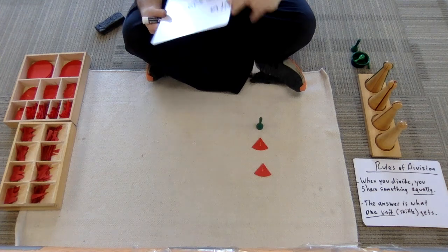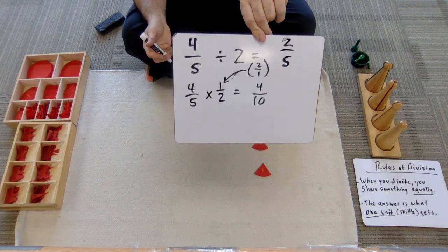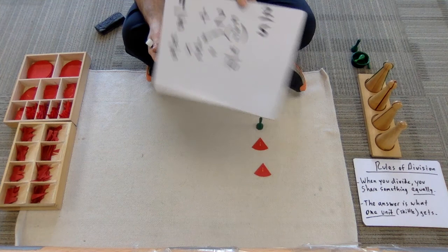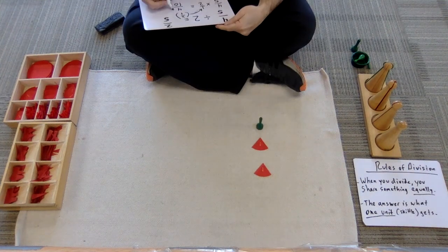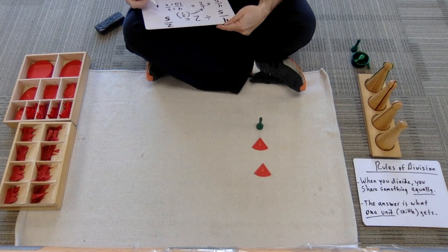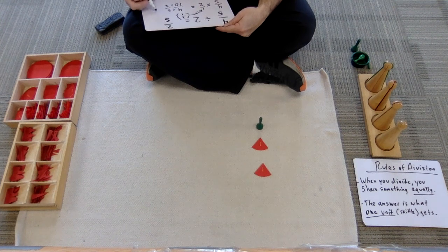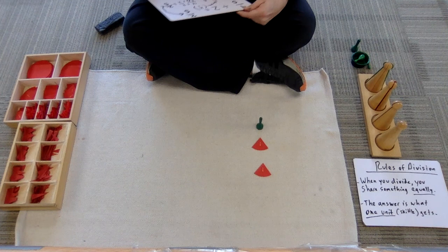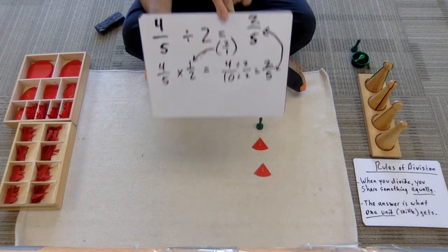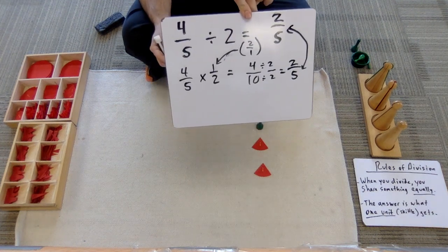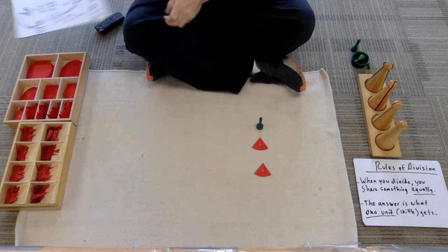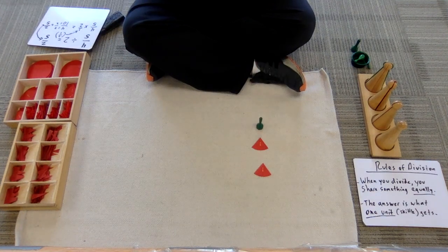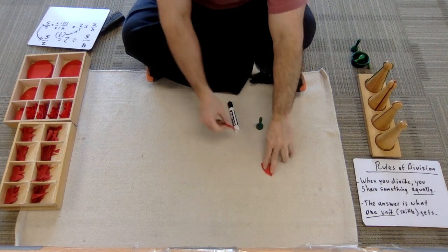I can reduce four-tenths — divide both numerator and denominator by two, keeping it fair. That gives me two-fifths. So using the Montessori materials or doing it the abstract way, I get an answer of two-fifths for one unit. That is the division of a fraction by a whole number.